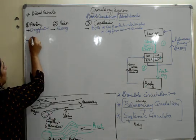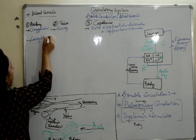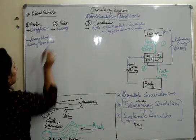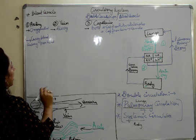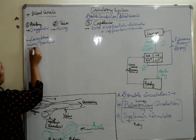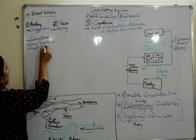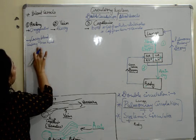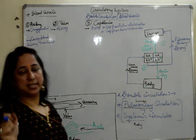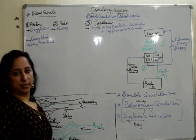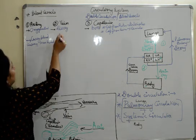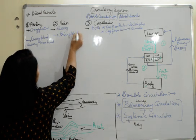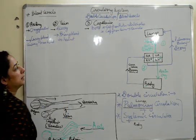Next one says that arteries carry blood away from heart except pulmonary artery because that is - except pulmonary artery. All the arteries they carry the blood away from the heart. And veins they bring the blood to heart. Capillaries, again they do both.